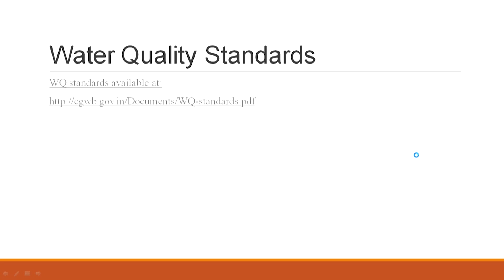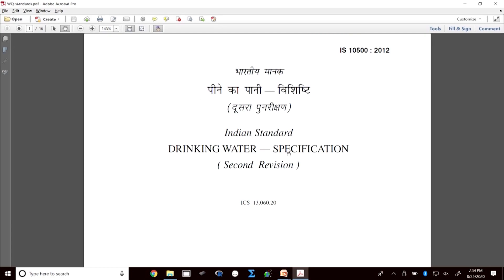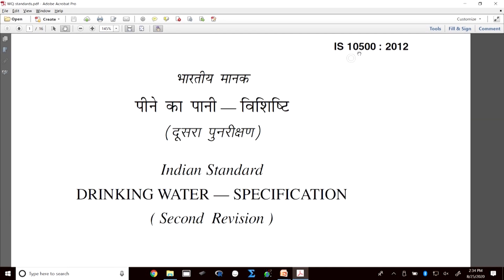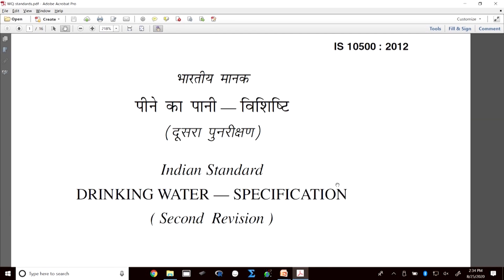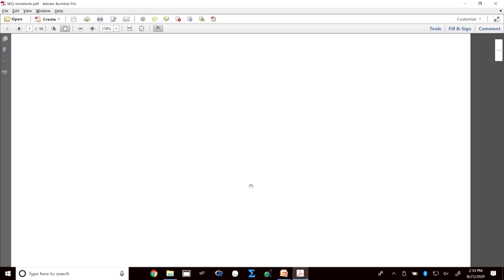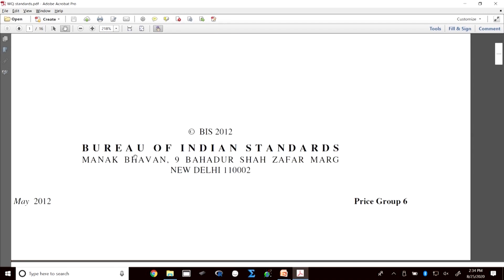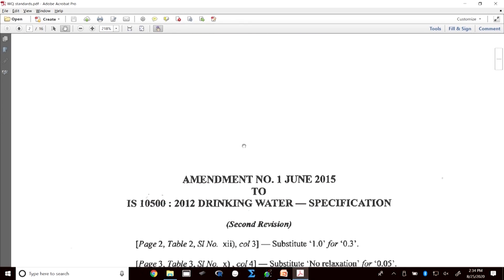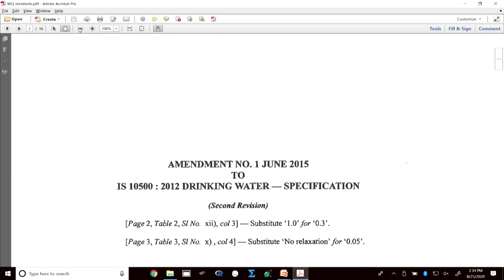Now, water quality standards. If you want to know what the drinking water quality standards are, the relevant document is the Indian Standard IS 10500:2012, published by the Bureau of Indian Standards.